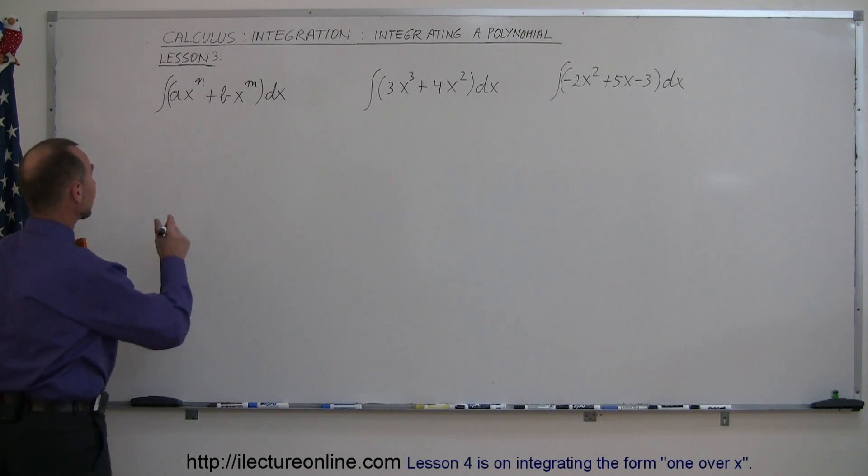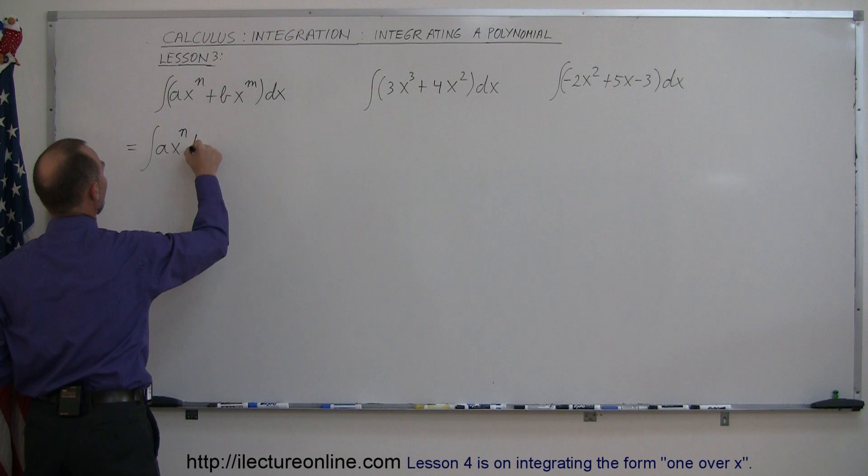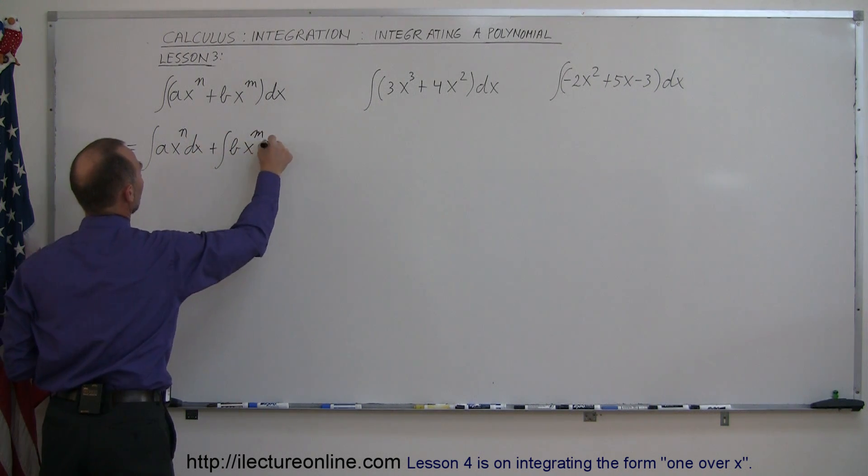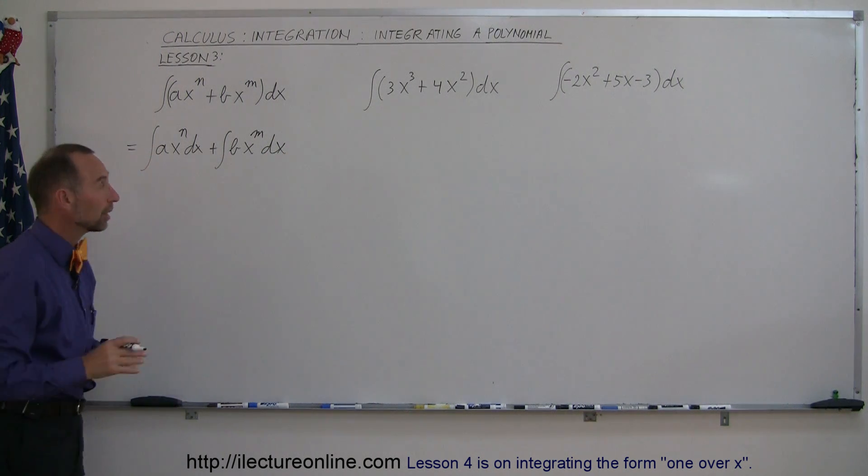Well, it turns out we can rewrite that as two integrals separated. So ax to the n power times dx, plus the integral of bx to the m power times dx. We can separate each term into its own integral.